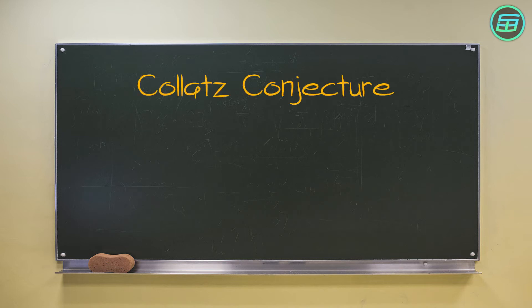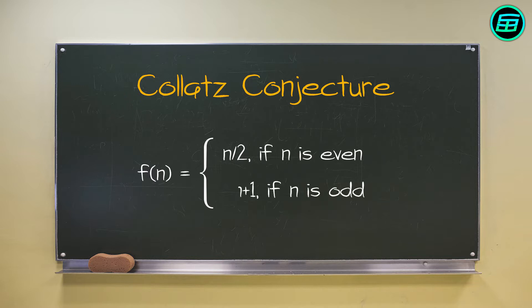The so-called Collatz conjecture is easy to explain. Choose any positive integer. If it's even, divide it by 2. If it's odd, multiply by 3 and add 1. Repeat this process with the result and just keep on going.